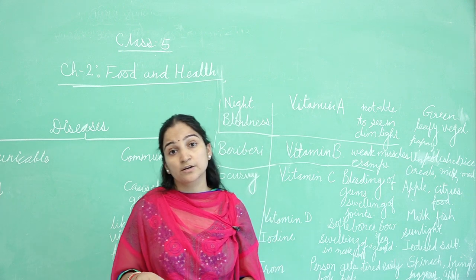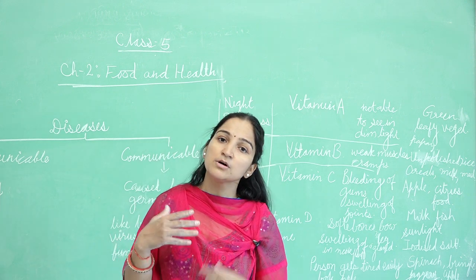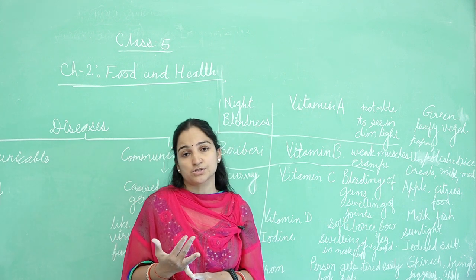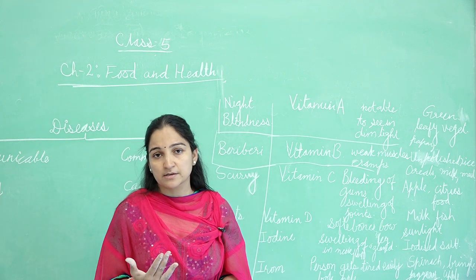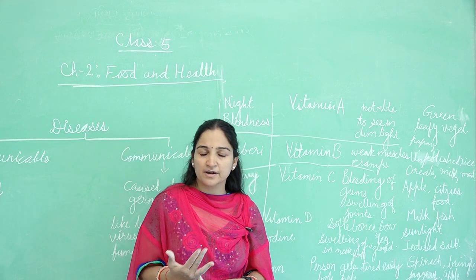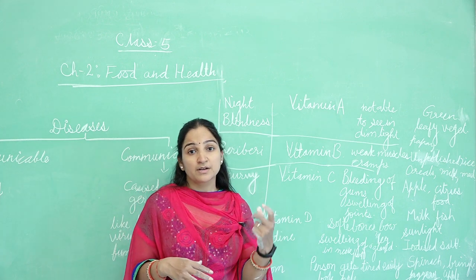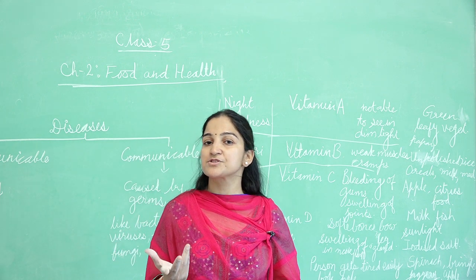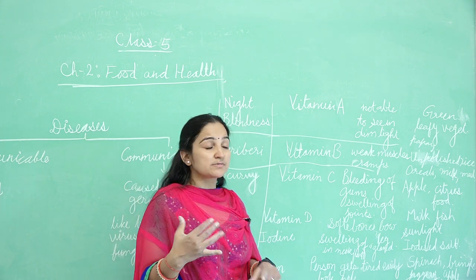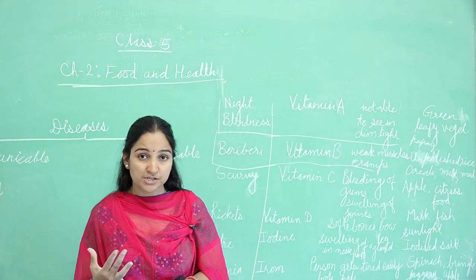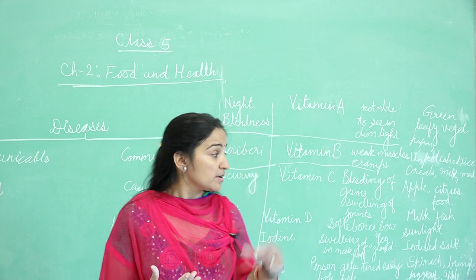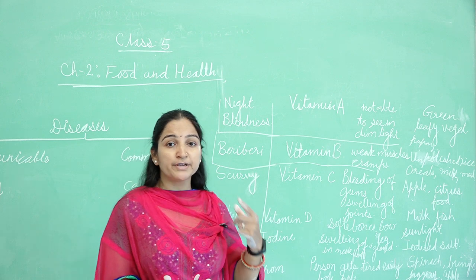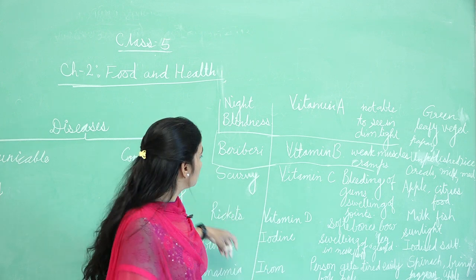To cure beri-beri, the person should eat Vitamin B-enriched food. That includes unpolished rice, pulses, all unpolished grains — from these you will get Vitamin B. Also cereals, milk, and meat. Non-vegetarians can also eat meat. That way it can be cured.